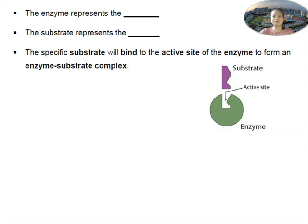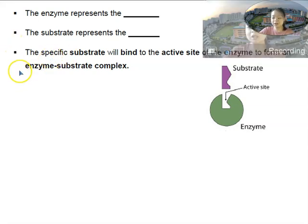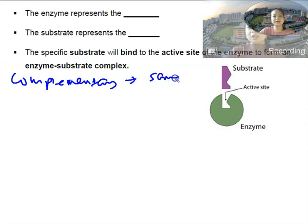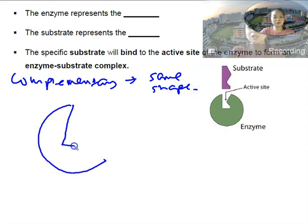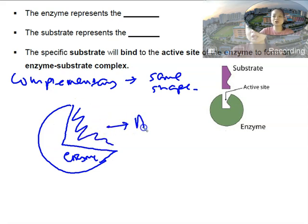Please turn to page two at the bottom part of your notes. Last week we spoke about the word 'complementary' — complementary means they must have the same shape. Let's say this is an enzyme, and we draw the enzyme like a Pac-Man shape. This particular area here is known as the active site, and why do we call this the active site? Because this is where all the chemical reactions take place.